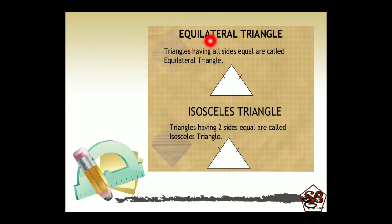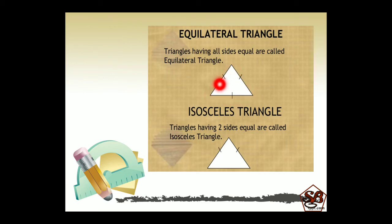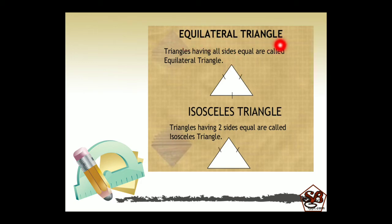The first one is equilateral triangle. Triangles having all sides equal are called equilateral triangles. Here you can see this image — there is one line, one and one on each side. All the sides have the same number of lines, which means all three sides are the same in length. These types of triangles are called equilateral triangles.